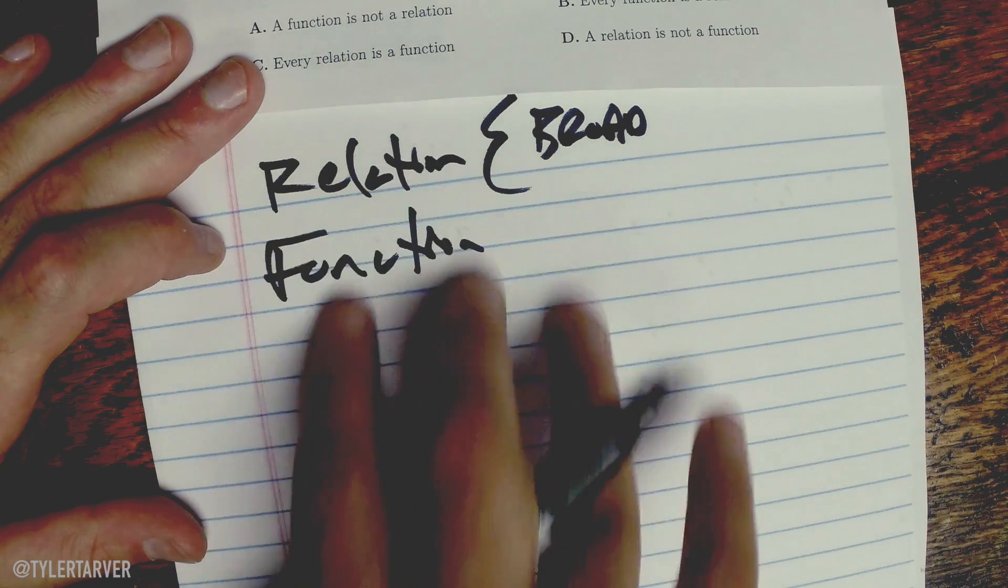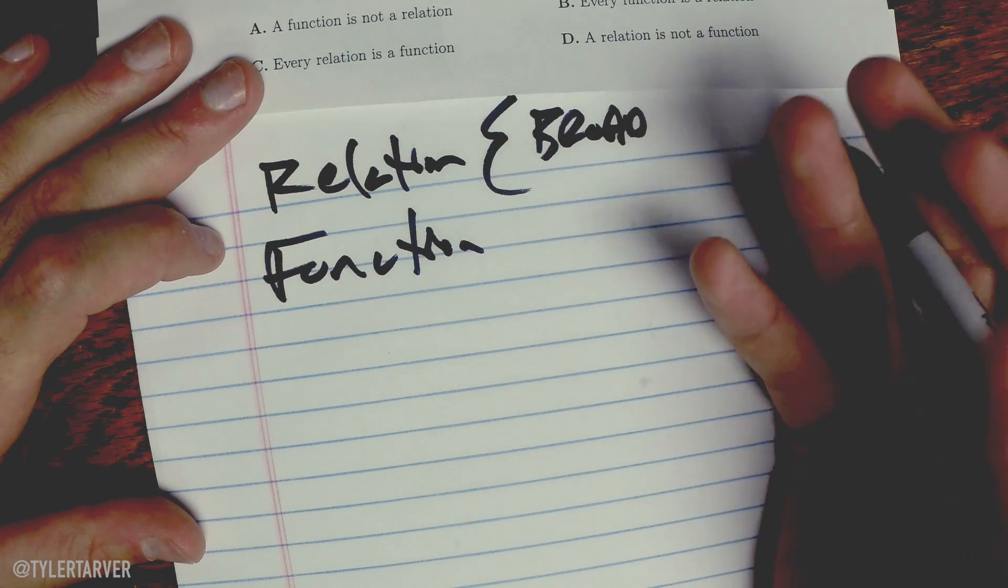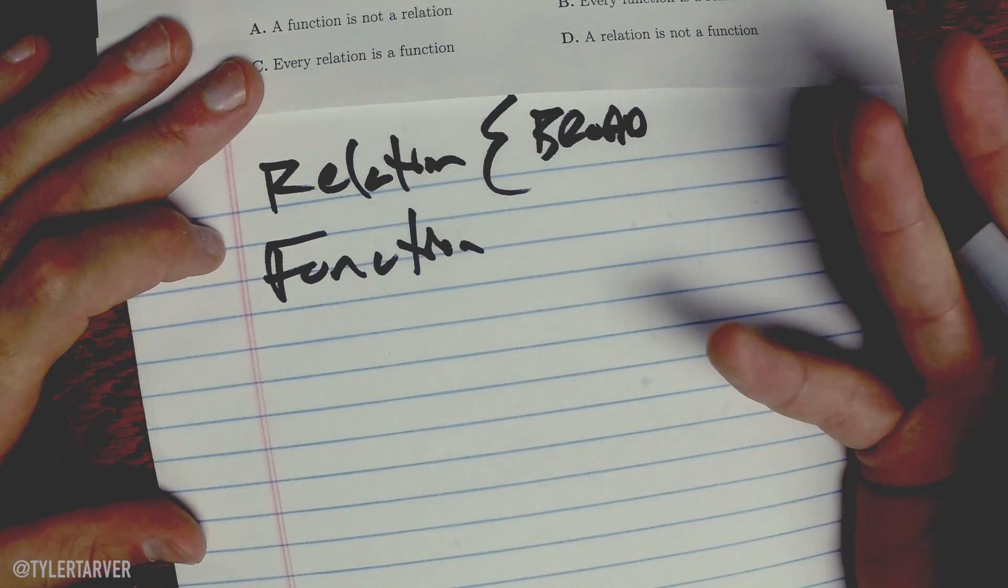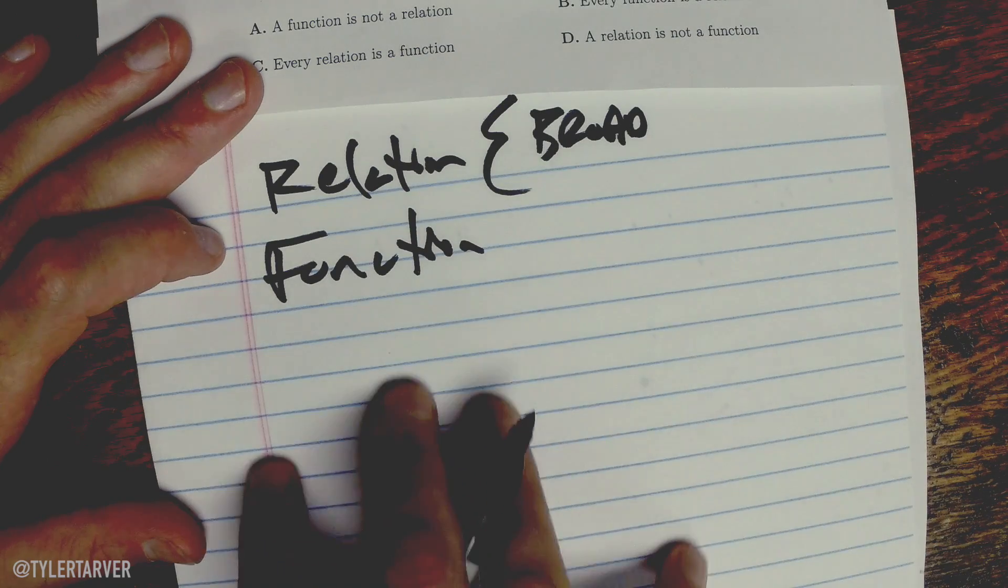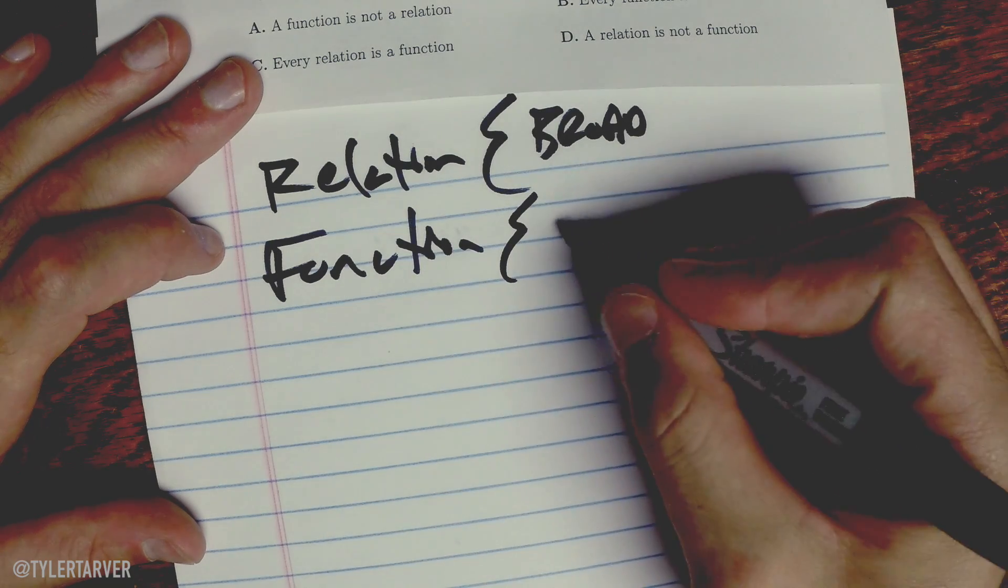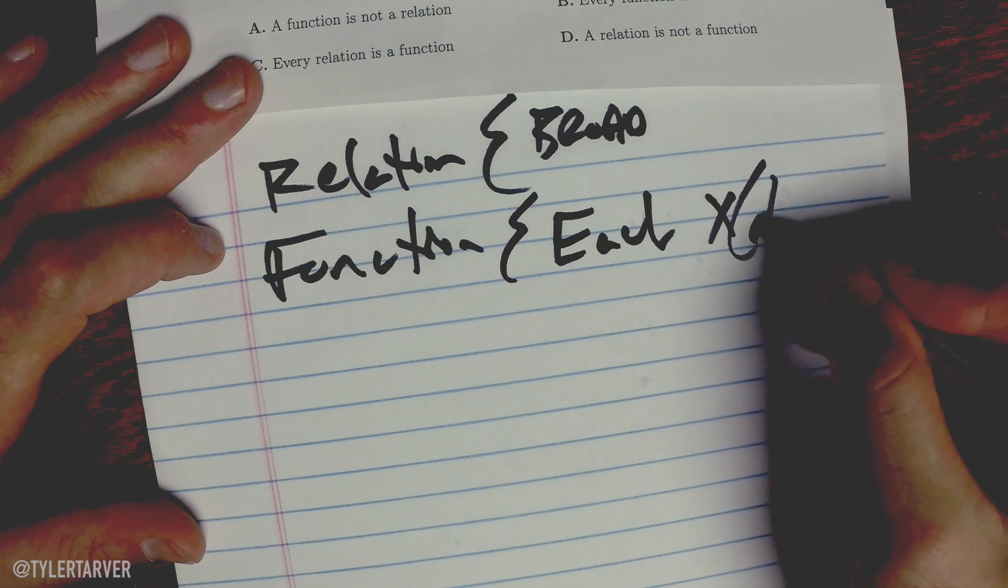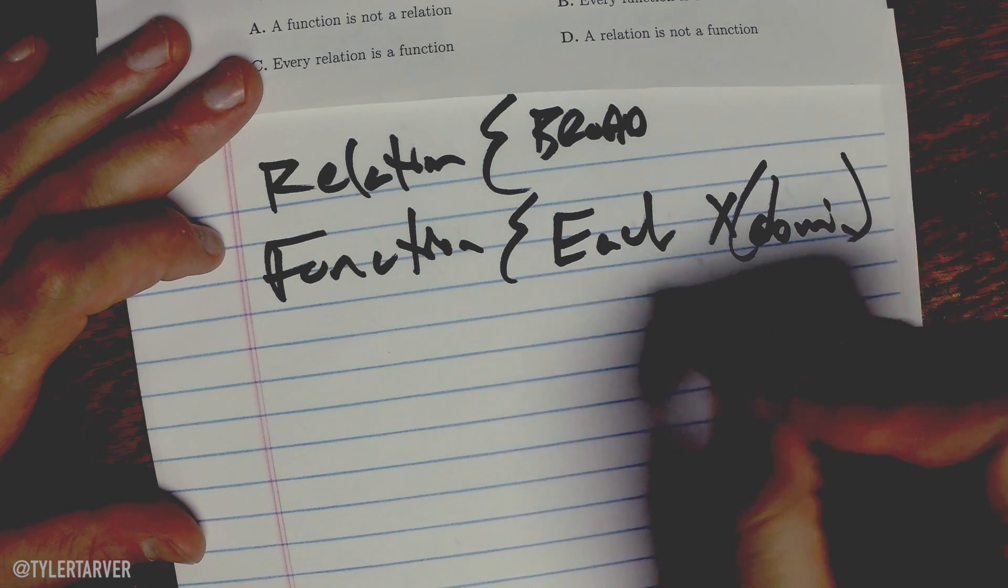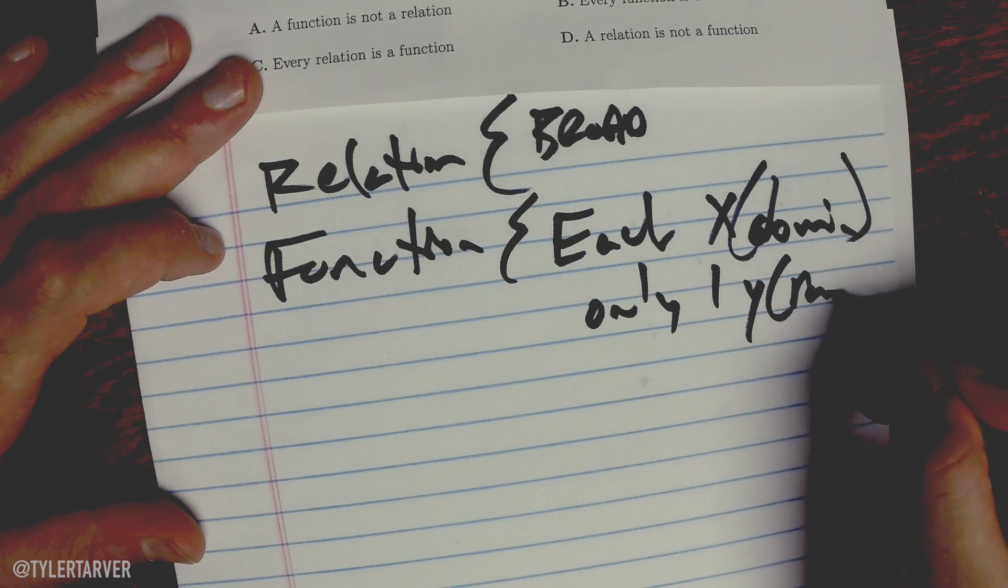A function is essentially a subset of relation, which means that a function is like a proper relation. It's a relation that makes sense, that pairs up. The official rule is for each x or domain, you have only one y, which is your range.